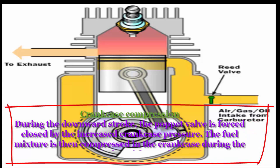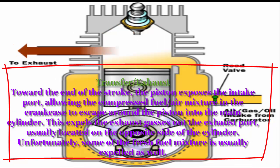Crankcase Compression: During the downward stroke, the poppet valve is forced closed by the increased crankcase pressure. The fuel mixture is then compressed in the crankcase during the remainder of the stroke.